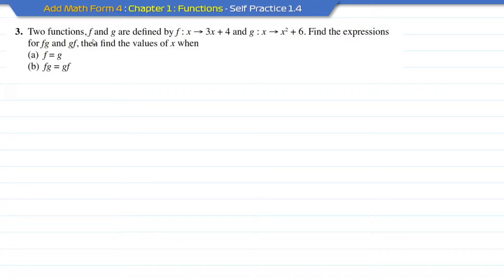Question 3. Two functions f and g are defined by f(x) equal to 3x plus 4 and g(x) equal to x squared plus 6. Find the expression for fg and gf, then find the value of x.